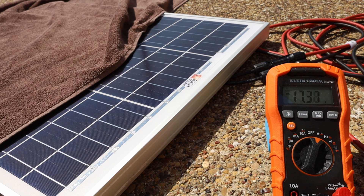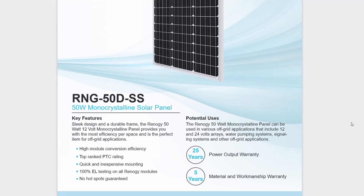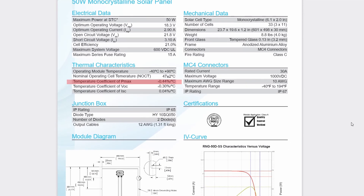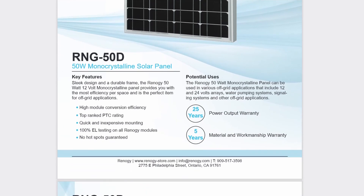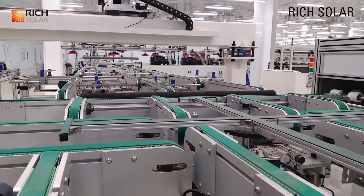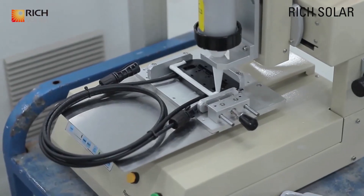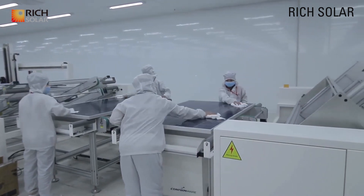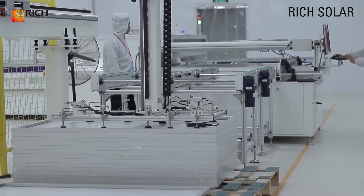I assumed both panels were wired in parallel and not in series, otherwise their output would have dropped to almost zero. Temperature coefficient is another way to compare the panels. The temperature coefficient of Pmax for the Renogy monocrystalline panel is minus 0.44% per degree Celsius, meaning the panel will lose 0.44% of its max power for every degree Celsius over 25°C or 77°F. I couldn't find a spec sheet for the Rich Solar polycrystalline panel, but a video claimed its temperature coefficient of Pmax was minus 0.45% per degree Celsius — very similar to the Renogy panel.